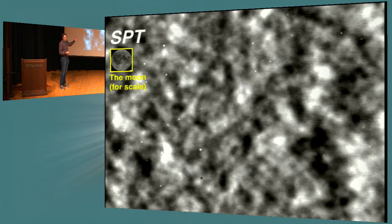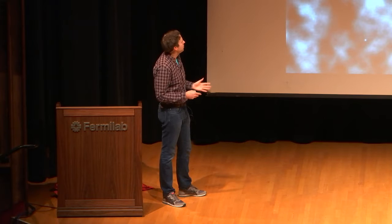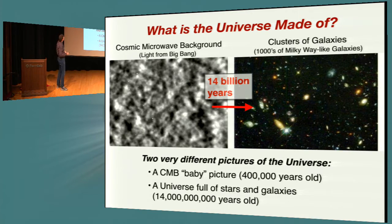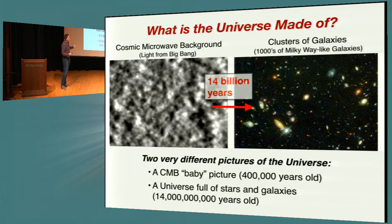We're looking at the universe at such a different time in its history. What's really powerful is we can compare this image to what the universe looks like today and start asking: what is the universe made of? It's so powerful because this is a time before there were stars, before there were galaxies, where nothing had formed yet — just quantum fluctuations stretched to huge scales. But given 14 billion years, it has to look like the universe we know around us today, with stars, galaxies, and planets. It's an incredibly powerful test of what the universe is made of and how it's evolving.